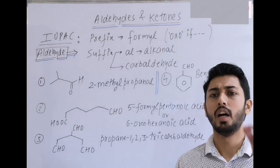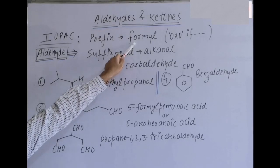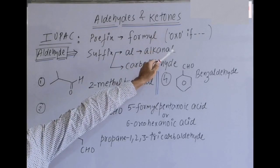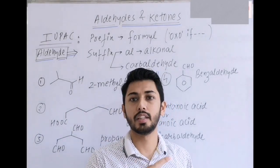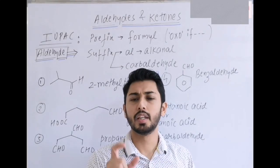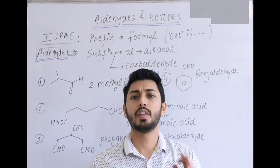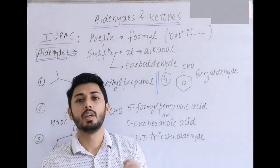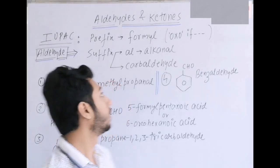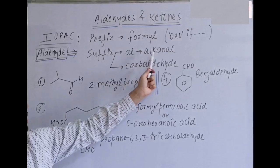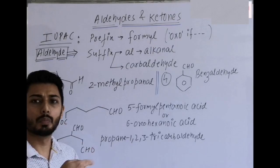For aldehydes, the prefix is 'formyl' — most commonly we use 'formyl'. 'Oxo' can also be used depending on whether the carbon of the aldehyde is counted. So generally, 'formyl' is the prefix for aldehyde; if the aldehyde carbon is counted, we use 'oxo'. The suffix is 'al', meaning while naming it becomes 'alkanal'.